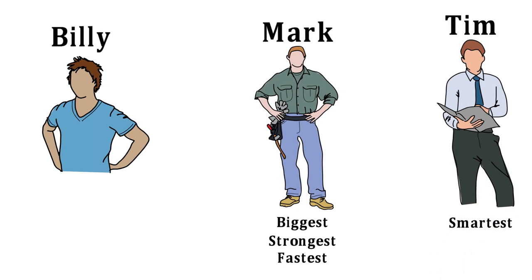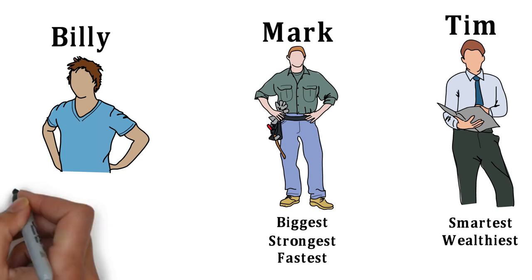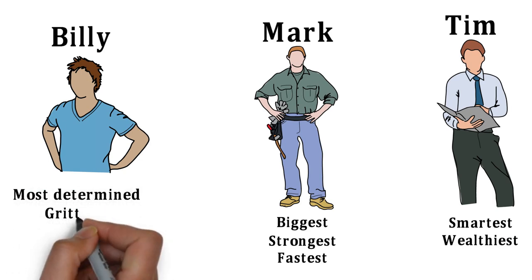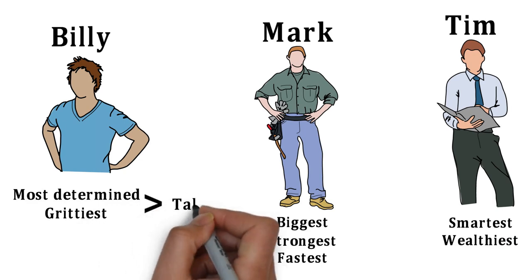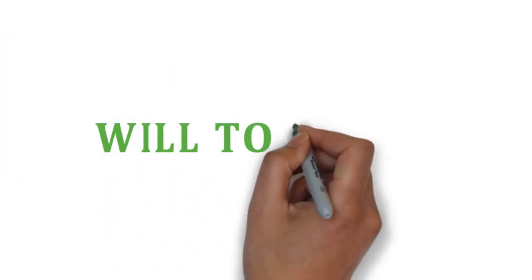Tim is the smartest and came from the wealthiest family. But Billy is the only one that passed SEAL training. Why? Because determination and grit are always more important than talent. SEAL training was a great equalizer. Nothing mattered but your will to succeed.